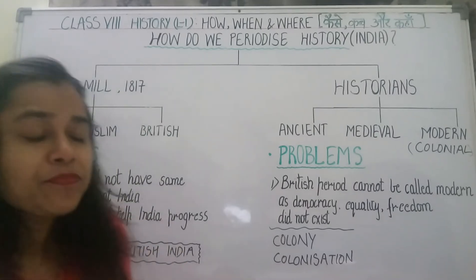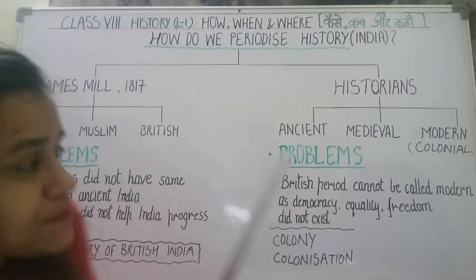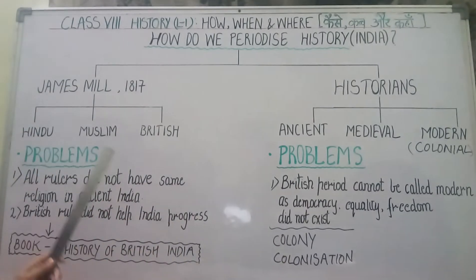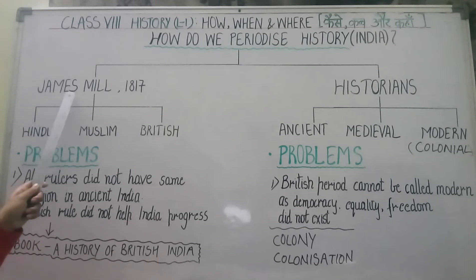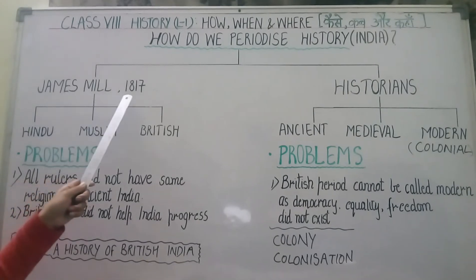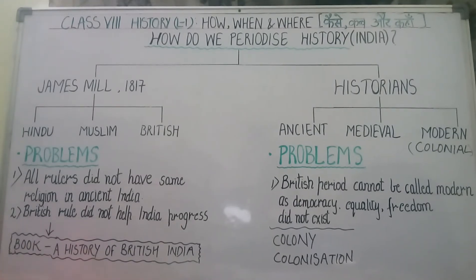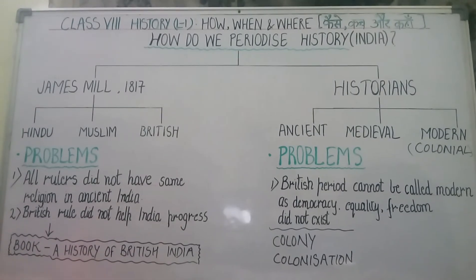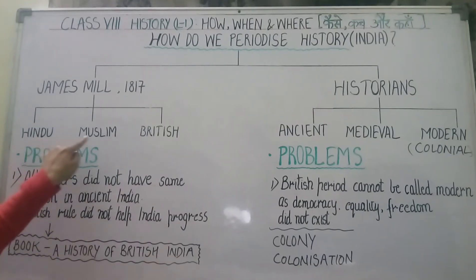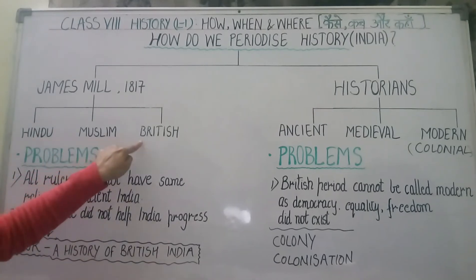Do classifications hain. The first classification was given by James Mill in 1817. James Mill ne 1817 mein ek book likhi — 'A History of British India' — jis mein unhone Indian history ko teen parts mein divide kiya: Hindu, Muslim, and British.